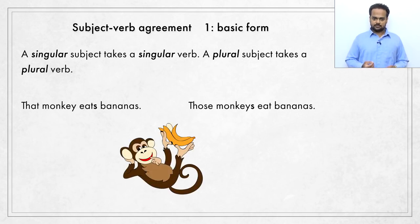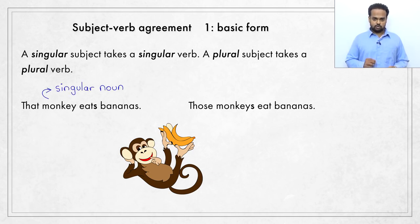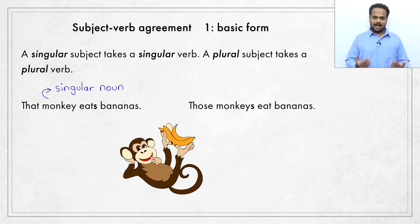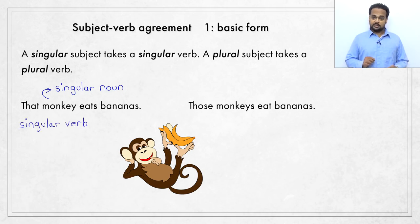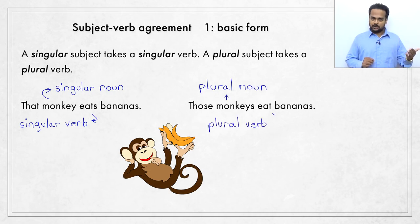Take these two sentences: 'That monkey eats bananas' and 'Those monkeys eat bananas.' In the first sentence we see a singular noun as the subject — monkey. Noun means a name, so here monkey is the name of an animal. This is the subject. The verb is eats. In this sentence the subject is a singular noun, one monkey, so the verb also needs to be singular — eats.